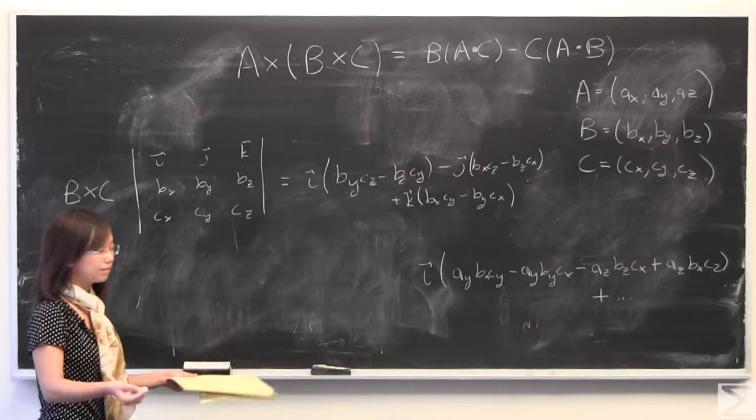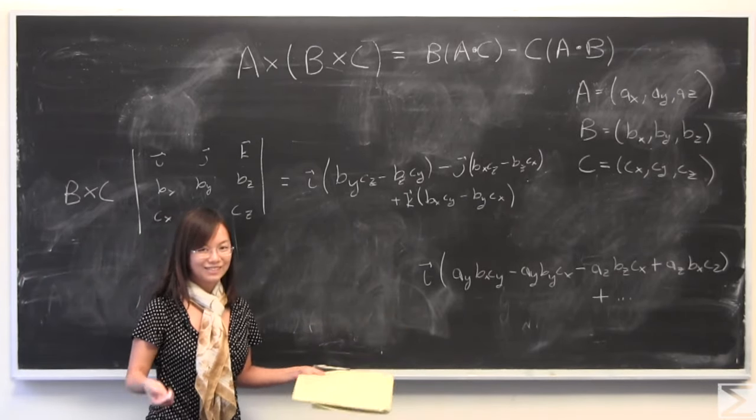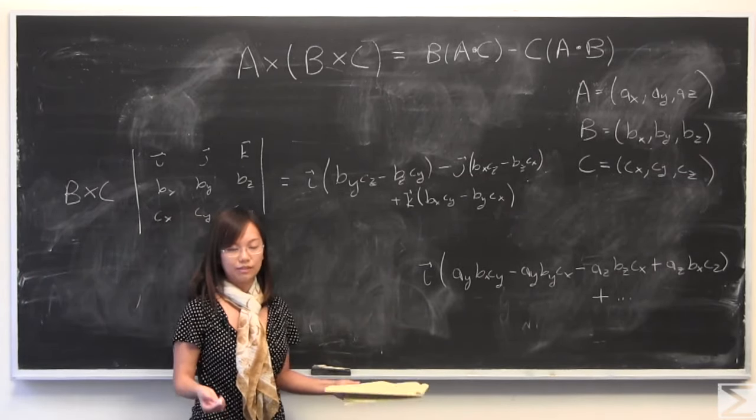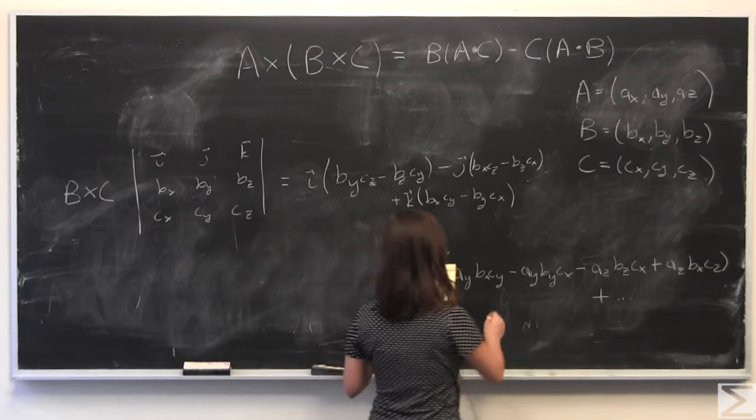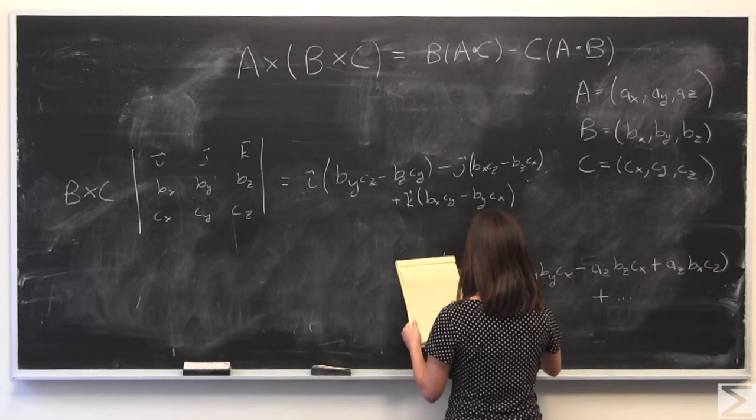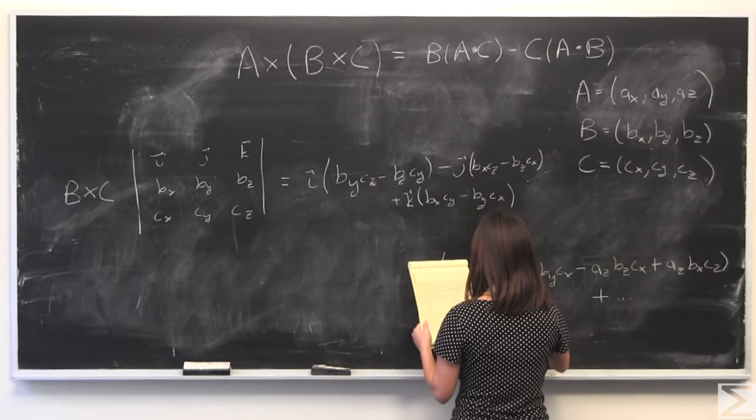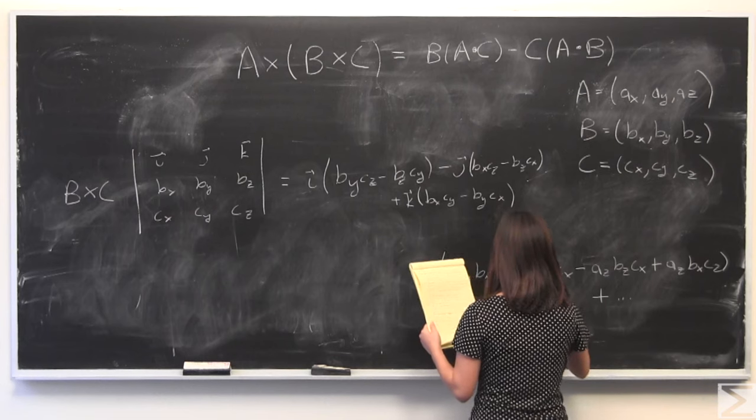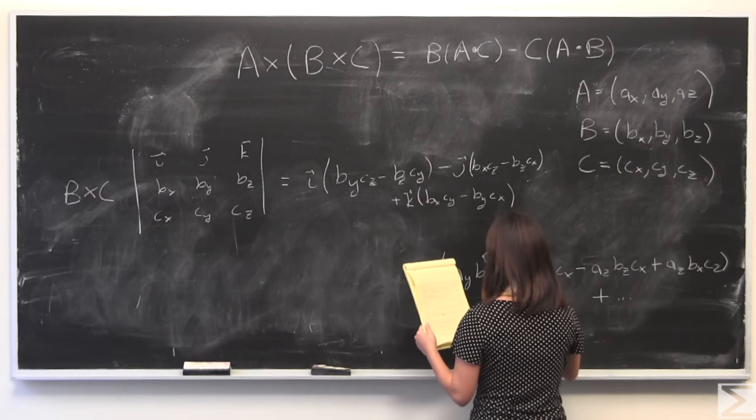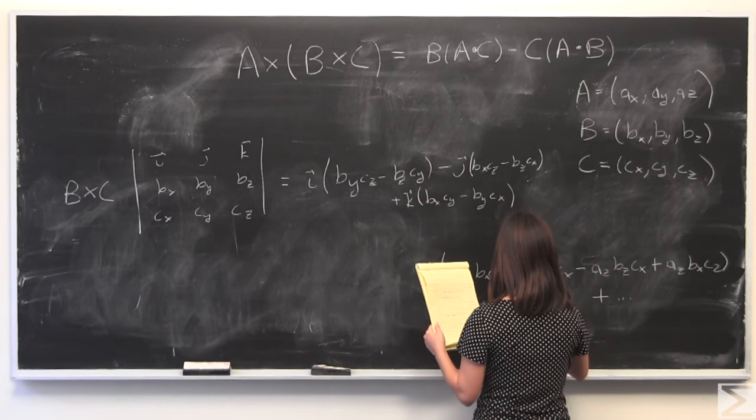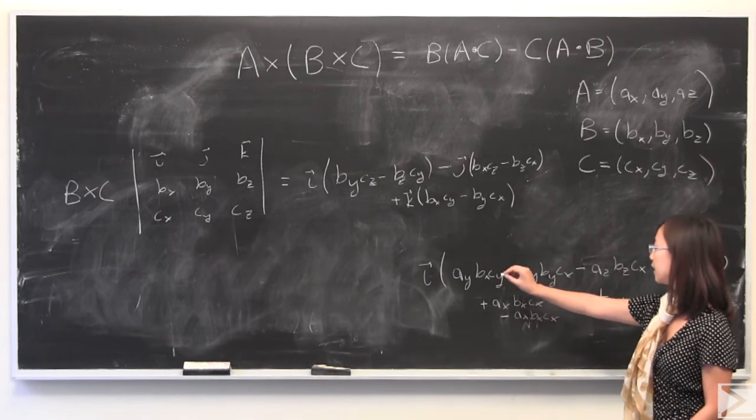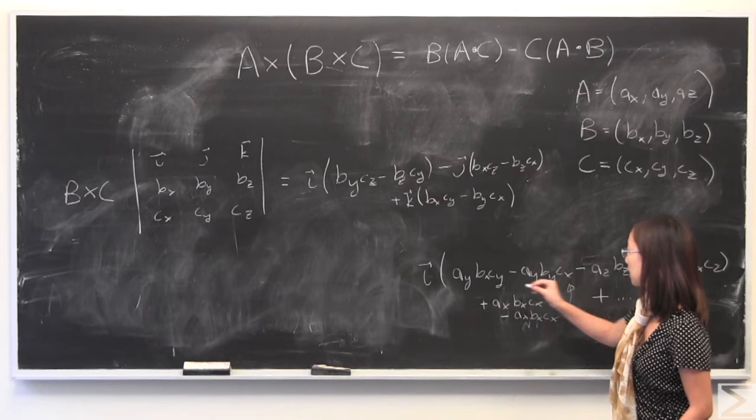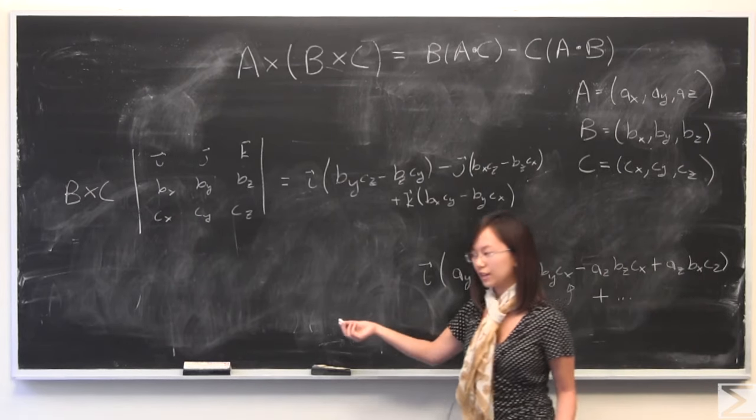So this is where the kind of cool trick comes in that you need to solve the problem in this way. I'm going to add a term, ax, bx, cx. Then I'm going to subtract ax, bx, cx. And that's the equivalent to adding zero. And I'm going to add that in to this parentheses that has to do with the i component. And you're going to see why I do that in a second.